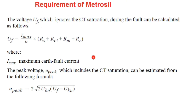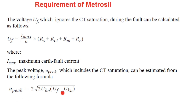To determine whether the metrosil or voltage dependent resistor is required, we first calculate the peak voltage developed under fault condition, given by: Upeak = 2√2 × √(Ukn × Uf − Ukn²), where Ukn is the CT knee point voltage and Uf is the voltage developed under fault condition in the CT secondary circuit.